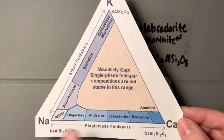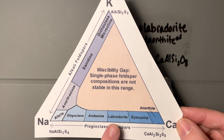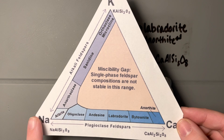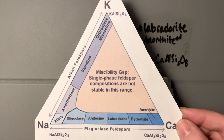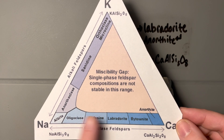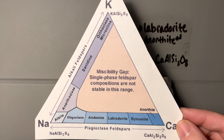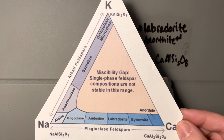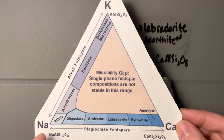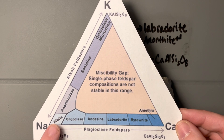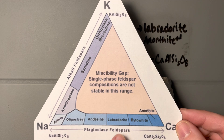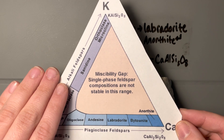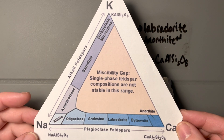We'll focus on albite, labradorite, and anorthite — the sodium end member all the way to the calcium end member. If you were on a quiz or an exam and just said 'plagioclase feldspar' you would get the points. You might get a couple of bonus points if you went out on a limb and said you think it's actually albite or labradorite, but just saying plagioclase or alkali is totally fine.